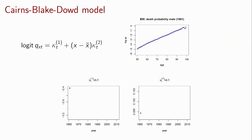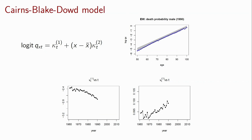Mortality has been going down, so kappa_1 declines. We also see that younger ages have been improving faster, so the slope changes over time, captured by kappa_2. That's the basic idea of the CBD model. What people have done is extend this to try to capture other features — adding a quadratic age term, adding cohort effects, combining features of both the Lee-Carter and CBD frameworks. In a lot of the literature, every other week you'd see a new paper adding a new term.